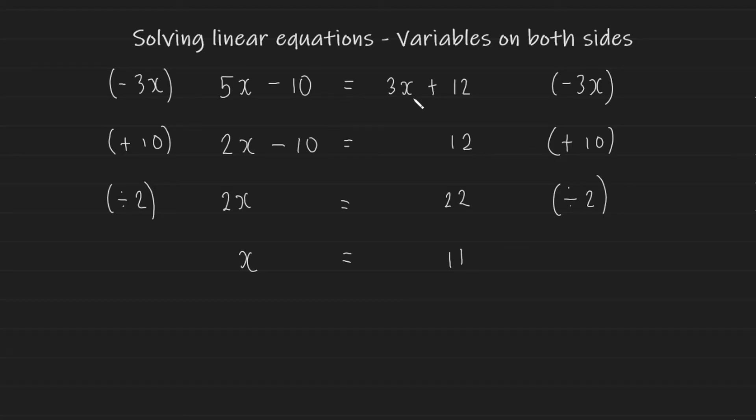It really is just as simple as that. The most important thing to remember is when you have a variable on both sides, you need to get rid of one of them. Getting rid of the smaller one puts you in a better position to solve the equation because it leaves you with a positive value at the end. You don't have to worry about fiddling with a negative x.